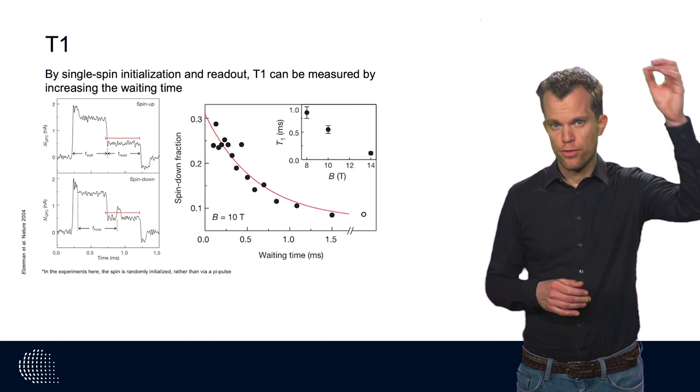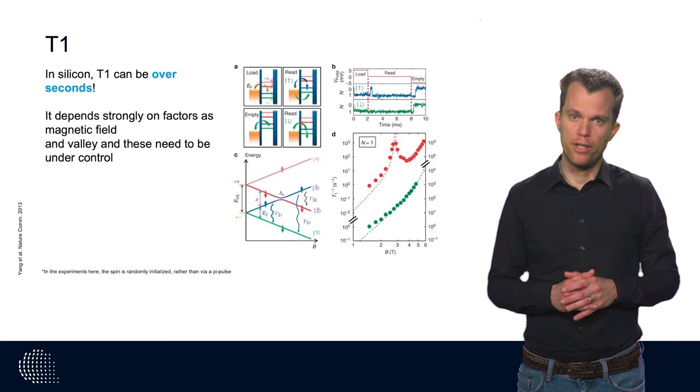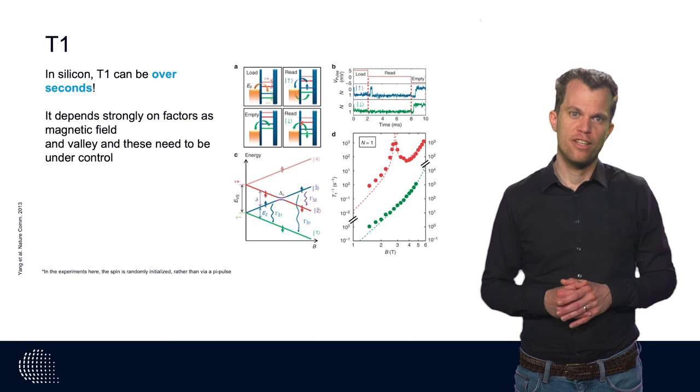After that, we monitor the time it takes before the spin qubit relaxes to the ground state. The characteristic time scale over which the spin relaxes to its ground state is called the T1 time. From experiments, we have learned that the T1 time can be seconds long, indeed an eternity in the quantum world.